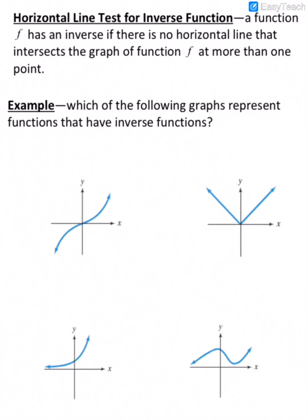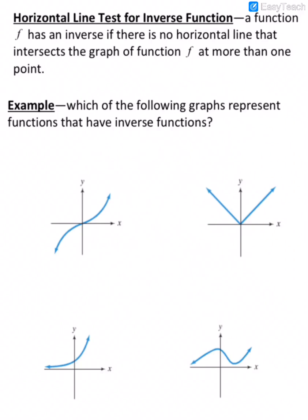When we talked about functions, we used the vertical line test on a graph — if a vertical line touches the graph in more than one spot at a time, it's not a function. To determine if a function has an inverse that is also a function, we use the horizontal line test. We take a horizontal line, and if the graph touches it in more than one spot at a time, then the function does not have an inverse that's a function.